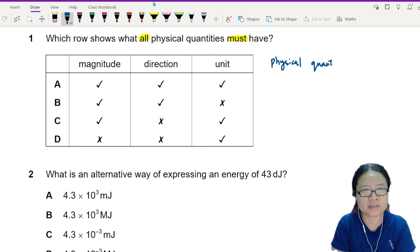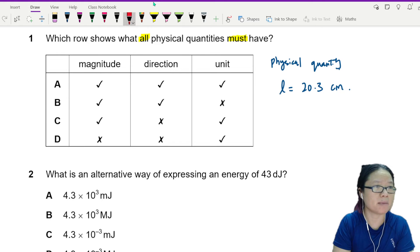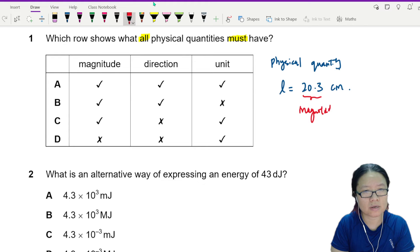normally we will write this in the form of, let's say, L is equal to 20.3 cm. So there is always a magnitude, and there is always a unit.